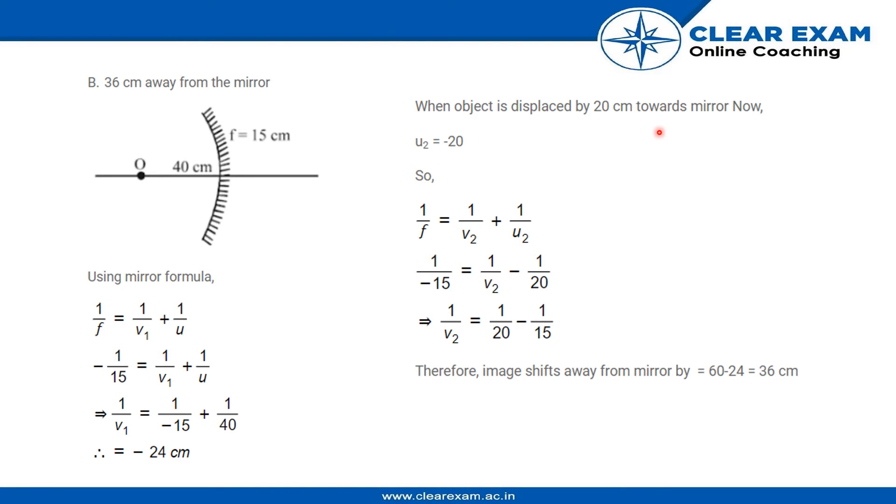Now it is given that object is displaced by 20 centimeters towards the mirror. Initially the object was at 40 centimeters. Displacing it 20 centimeters towards the mirror would bring it halfway here, leaving this distance as 20, right? So the new value of u2 is minus 20.